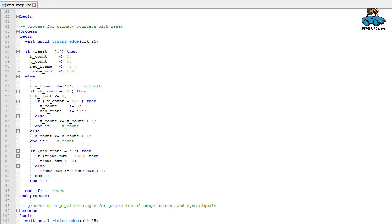In the first process we have our main counters for horizontal position, for vertical position, and for the frame number. The horizontal counter runs from 0 to 799, the vertical counter from 0 to 524, and we have a frame counter that runs from 0 to 1023. All counters start again at 0 when they reach their final value. These counters are used for the image generation which we will see below.